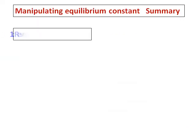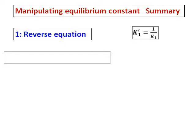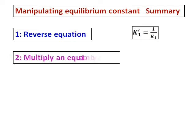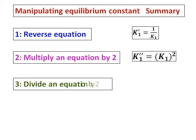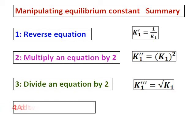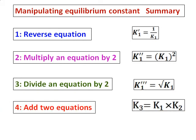To summarize all the rules together: when you reverse an equation, K1-dash equals 1 over K1. When you multiply an equation by 2, K1-double-dash equals K1 squared. When you divide an equation by 2, K1-triple-dash equals the square root of K1. And when you add two equations, K3 equals K1 times K2.